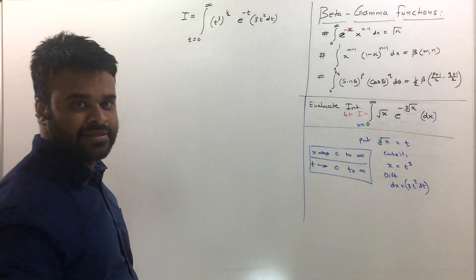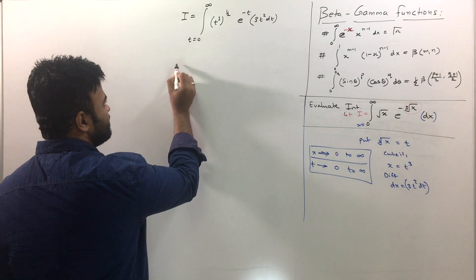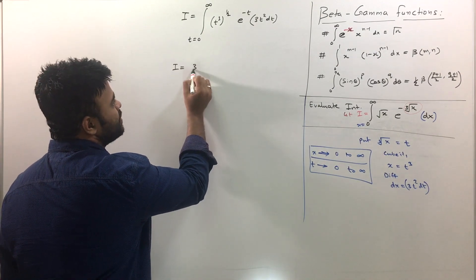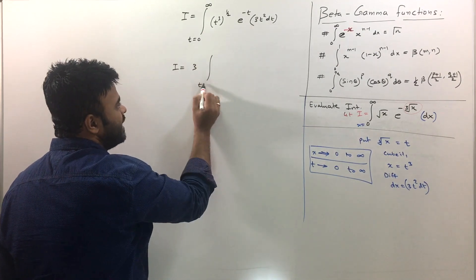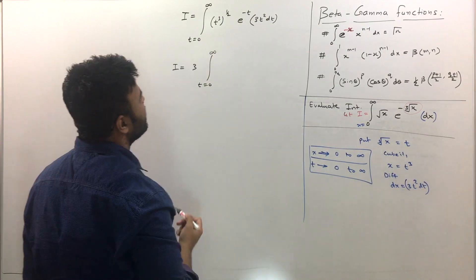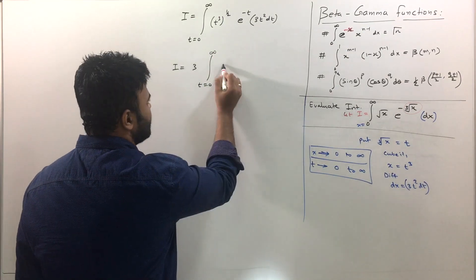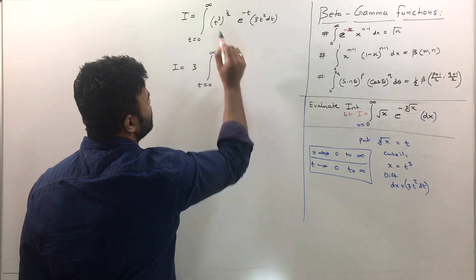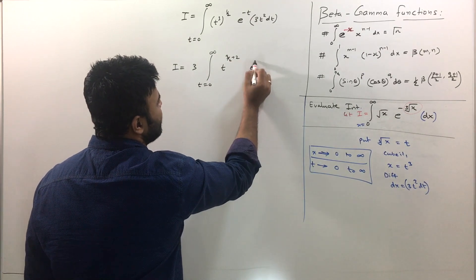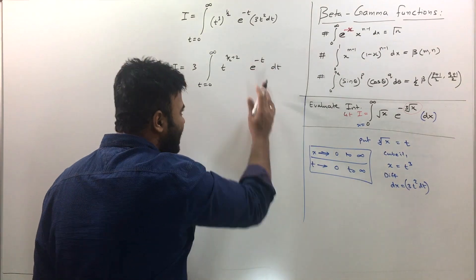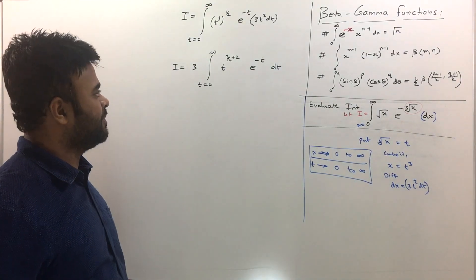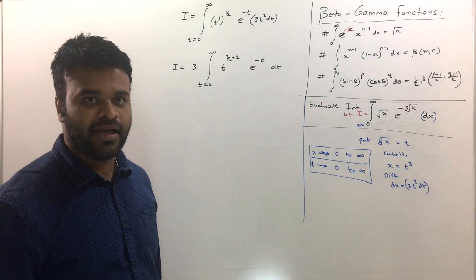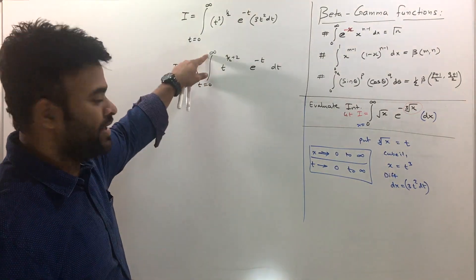Now let us simplify this integral more. I get i is equal to 3 is a constant taken outside. t is equal to 0 to infinity. And this is t raised, this is going to be 3 by 2. And then I can add 2 over here. So I took that 2t square there. e raised to minus t dt. And you see, it is exactly the form that I want.